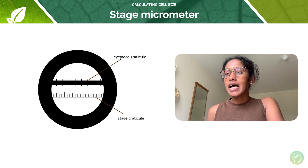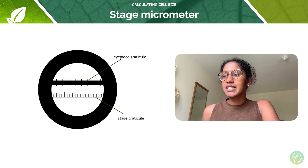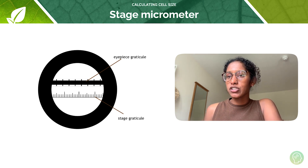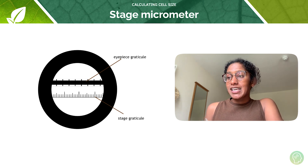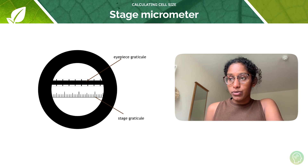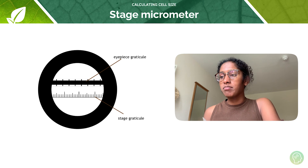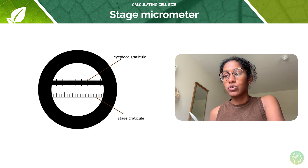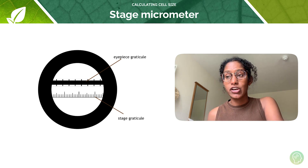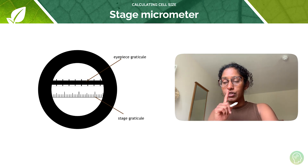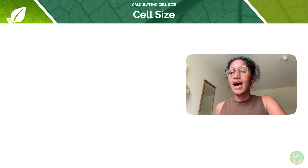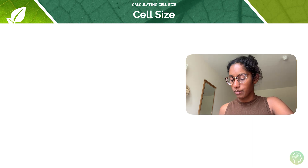In exam questions, the eyepiece graticule tends to be the one with small divisions. Even though the eyepiece graticule does not have units, it can have numbers and diagrams. So don't be mistaken into thinking that the 0.1 millimetre divisions refer to the graticule just because it looks like a millimetre ruler. We'll look at this in more detail in the worked example, so don't worry if that doesn't quite make sense for now.